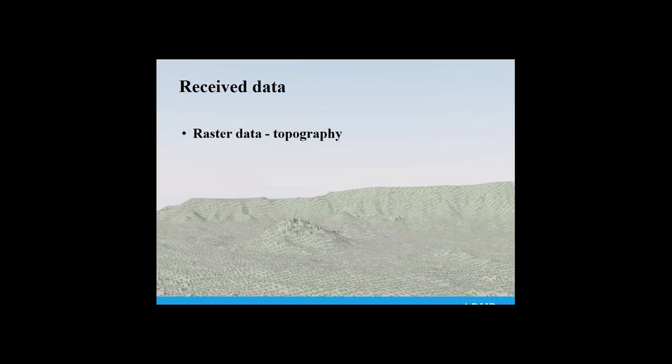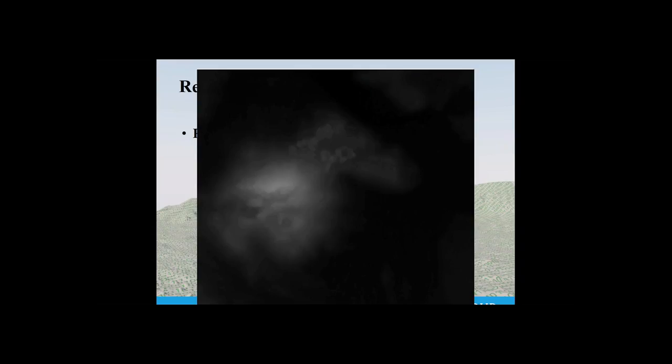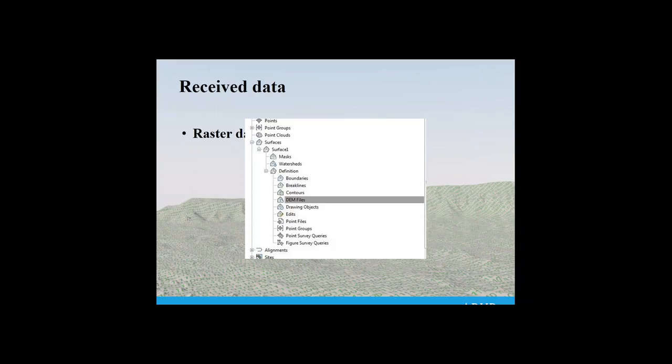The next thing I'm going to touch on is raster data, specifically topography because it's always a big one. Generally you receive it in a raster format — whether it's an ASC or a TIFF it doesn't really matter. They generally tend to look like a grey image when you look at it in ArcGIS without colouring it first. But sometimes you want to get more use out of it. So I'm going to demonstrate using Civil 3D to bring in that same raster data and get some use out of it.